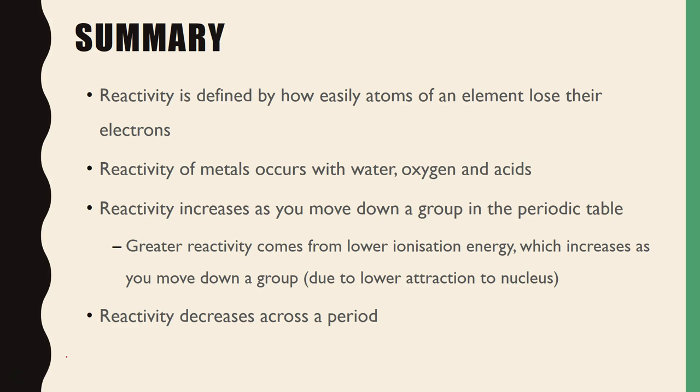For the summary of the lesson, reactivity is defined by how easily atoms of an element lose their electrons, or gain electrons, but particularly for metals, it's a loss of electrons. Reactivity in metals occurs with water, oxygen and acids, and they react according to a specific set of equations as I've been through. And reactivity increases as you move down a group in the periodic table because they have greater ionization energy or weaker electronegativity, which increases as you move down the group, and there's a lesser attraction to the nucleus. And reactivity decreases across a period. So from left to right, you have decrease in reactivity. Down the group, you have increase.